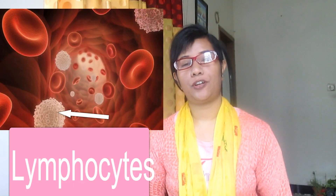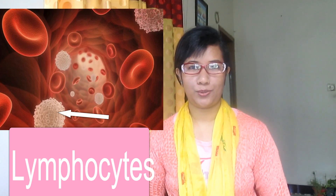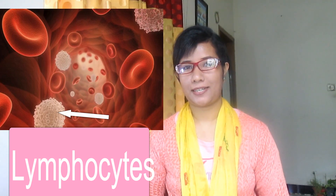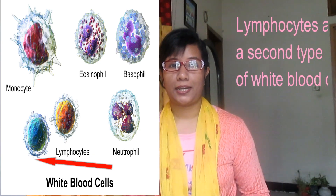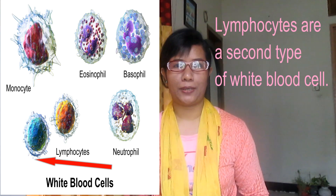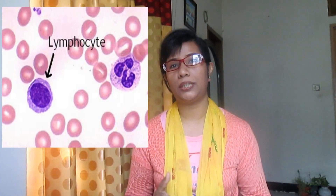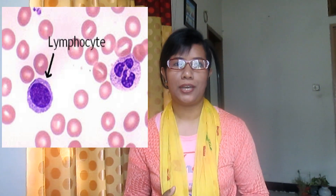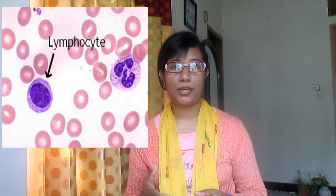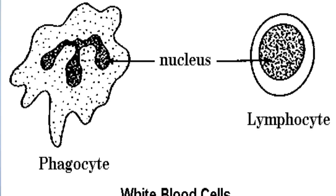Hello everyone, welcome to my channel. I'm Sharmin. Today I'm going to talk about lymphocytes. Lymphocytes are a second type of white blood cells and they play an important role in the immune response. Lymphocytes are smaller than phagocytes and have a large nucleus that fills most of the cell.